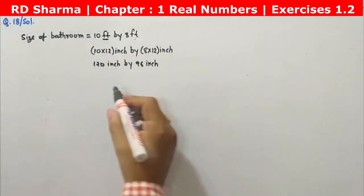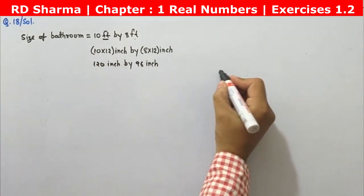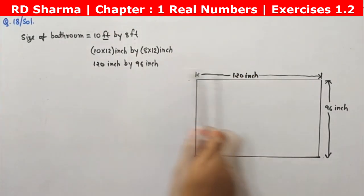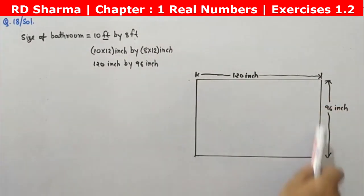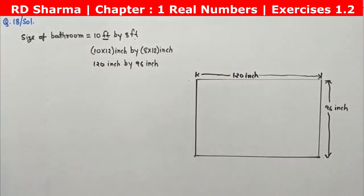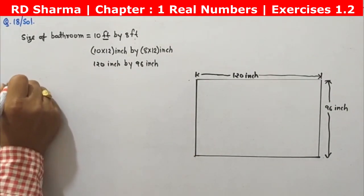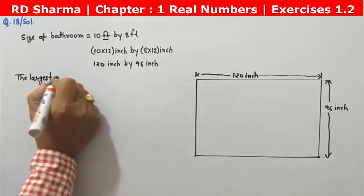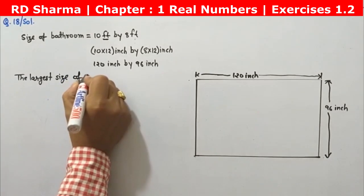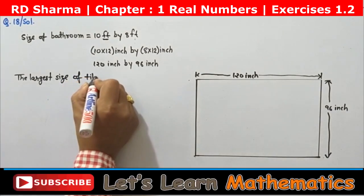So the size of the bathroom in inches is 120 inches by 96 inches. We have made a rough diagram to understand how the square-shaped tiles will fit into this area. This gives us the required area that the number of tiles will cover.